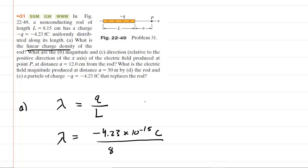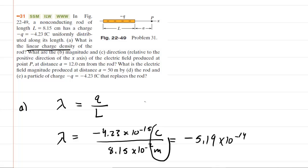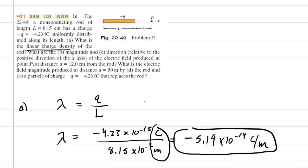Divided by the length of the rod, which is 8.15 centimeters — multiply that by 10 to the negative 2 to convert it into meters. When you punch this into your calculator, you should get negative 5.19 times 10 to the negative 14. The units will be coulombs per meter, as you can see from the calculational setup. So this is the answer to part A.